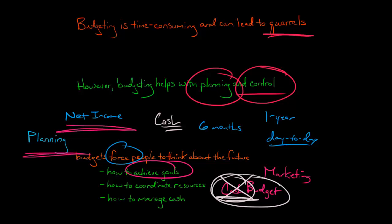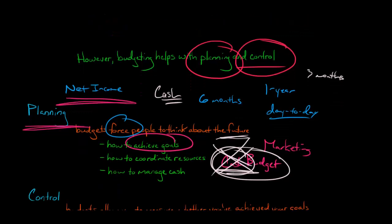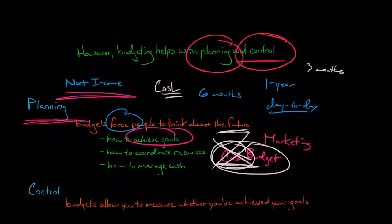So we can put together a cash budget and say, how much cash are we going to have three months from now, how much cash are we going to have six months? And if we see that at some point we're not going to have cash, we're going to run out of cash, we could take action today to do something about the future. So that's just some of the ideas on how budgets can help with planning.